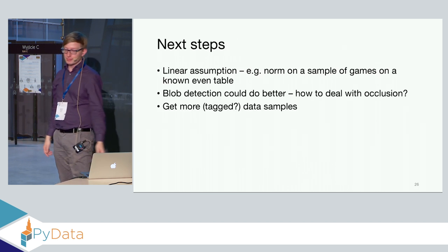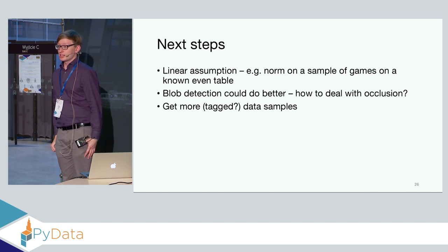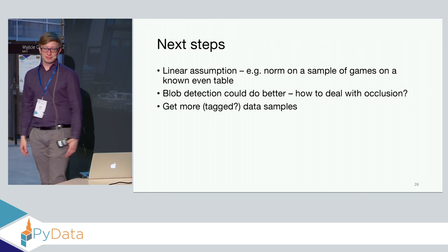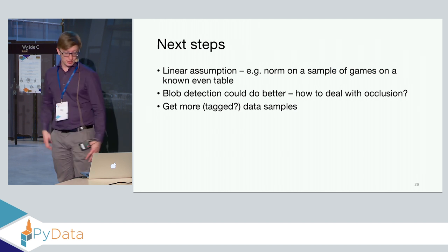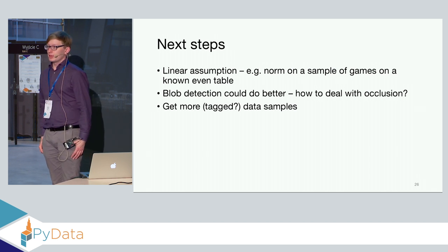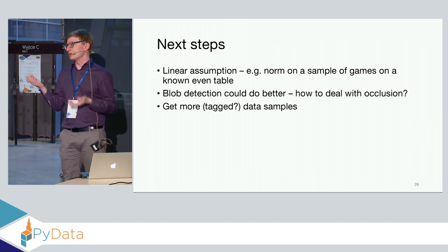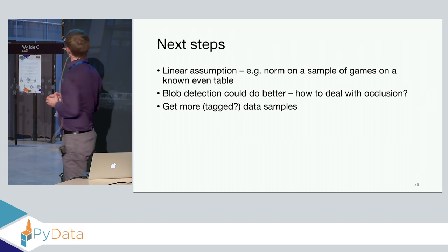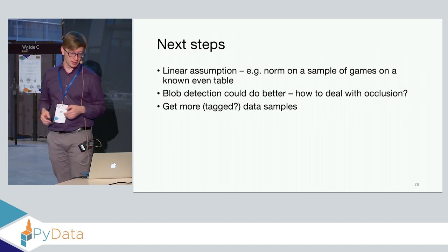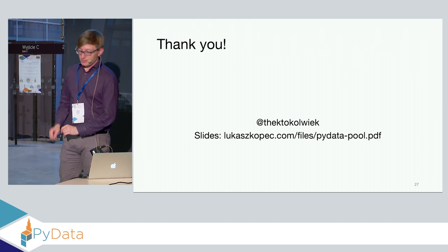In terms of next steps: there was a linear assumption that could be improved — one option is getting normalized data from a level table. Blob detection could also do better; without occlusion it works great, but with occlusion it's harder. It would also be good to get more data samples and tag them so that if we had ground truth, we could do something more supervised.